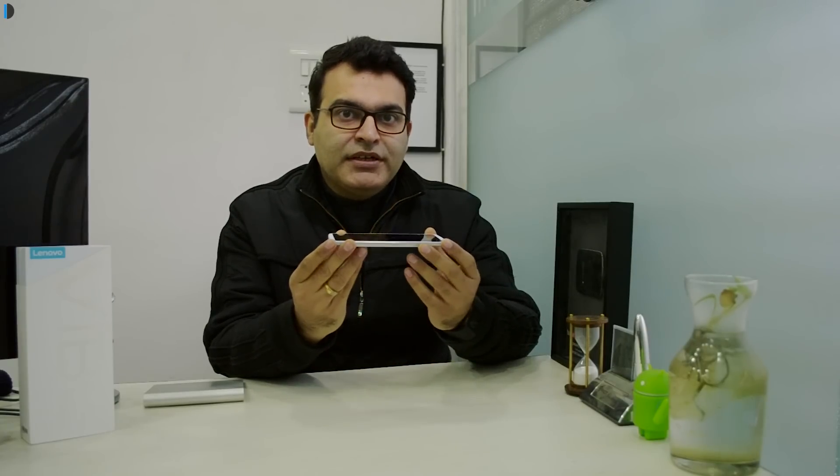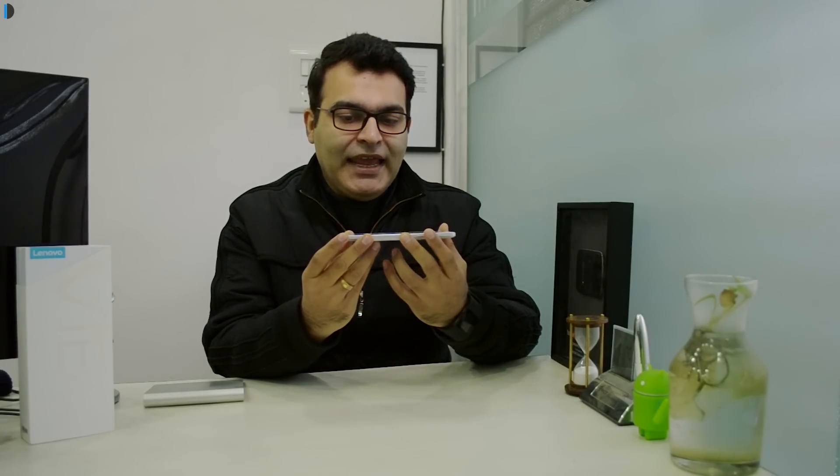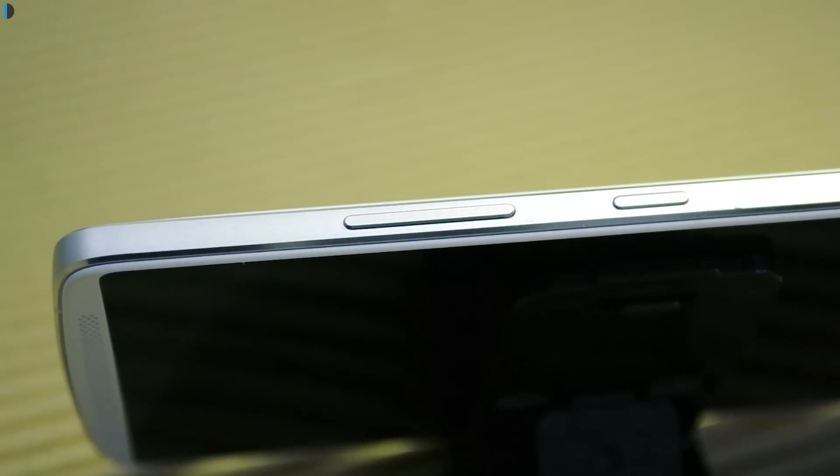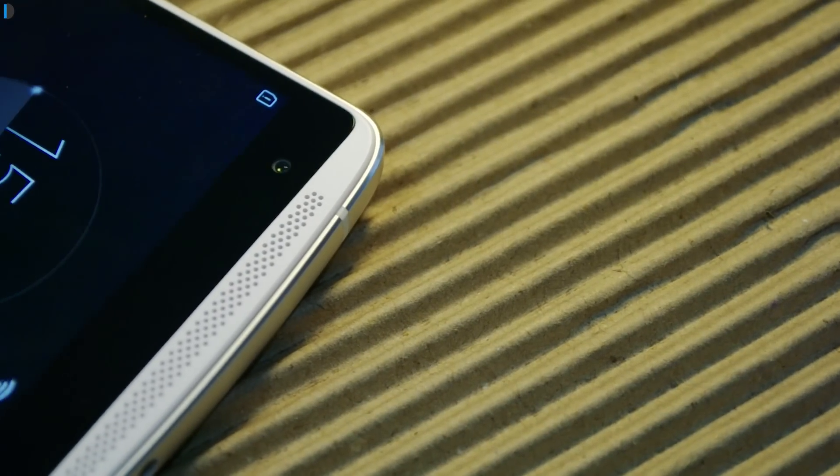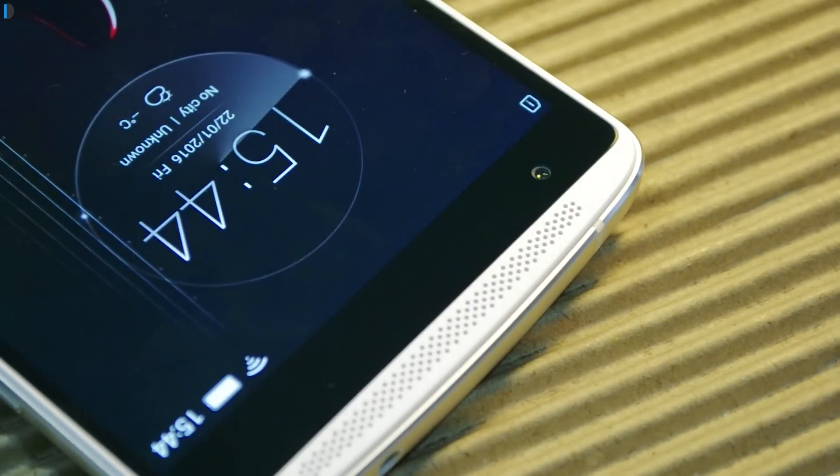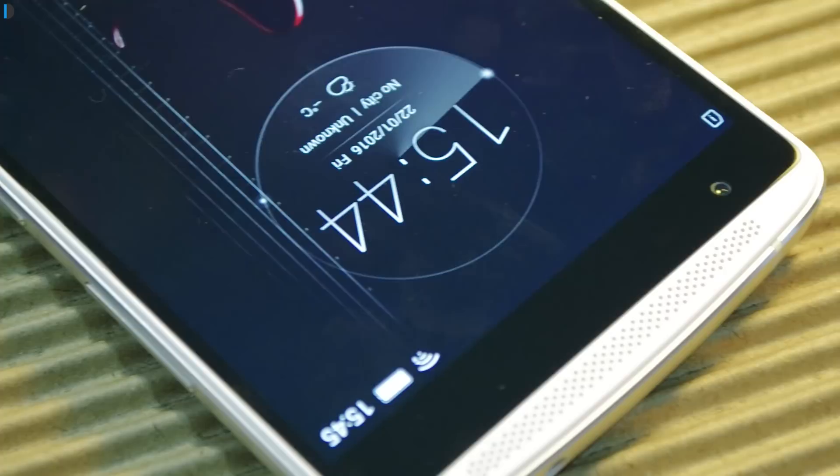Reason number one to buy Vibe X3 is the design and build quality. It shouts premium at every level. It is made of metal frame with chamfered edges, looks and feels really nice and premium. The back is high quality polycarbonate and is soft to touch. Reminds me of the Motorola Nexus 6 that we have seen. It has a nice curve which is ergonomic to feel in hand. The buttons are very tactile. The design use of metal as well as Gorilla Glass on front and the overall design language makes it feel very premium and look very nice aesthetically.